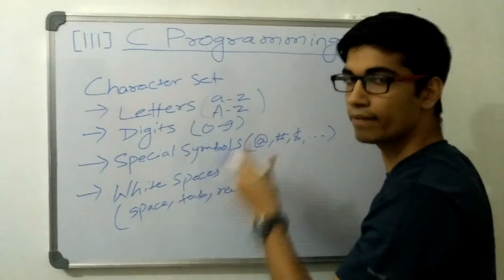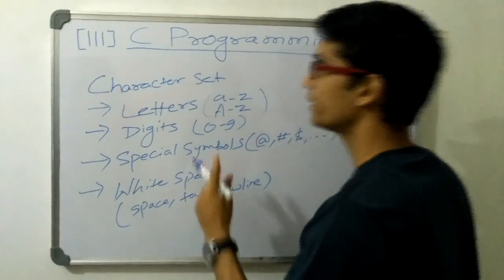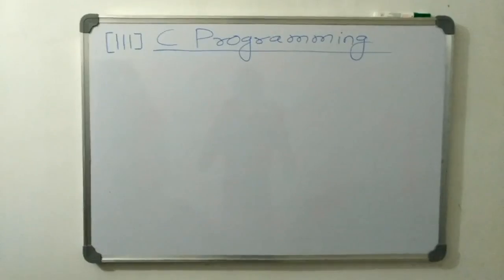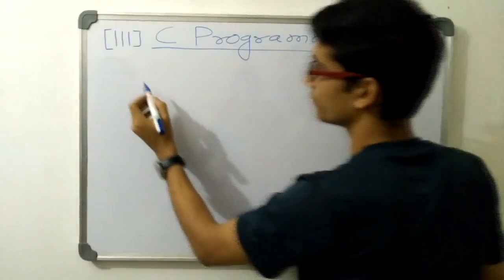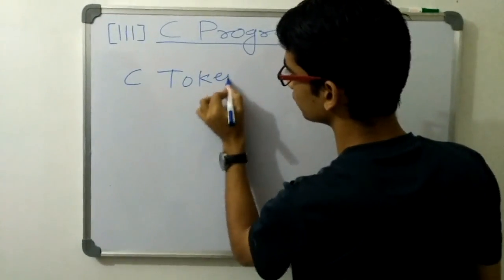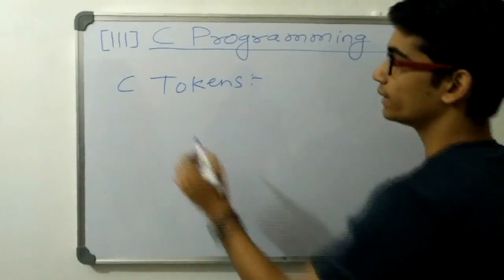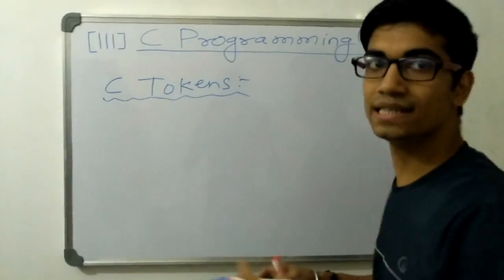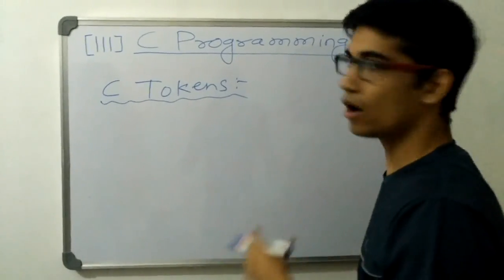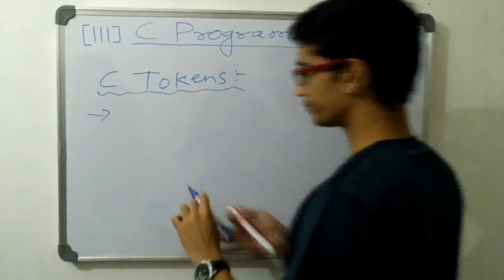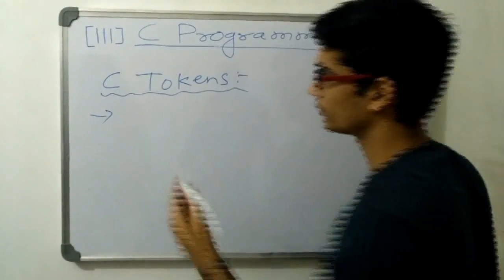White spaces include space, tab, and new line. This was the character set in C. We will see how we will be using this in our programming. Now let's move on to the next topic, that is C tokens. So what are C tokens? Every valid character and punctuation in C comprises C tokens, also called tokens.